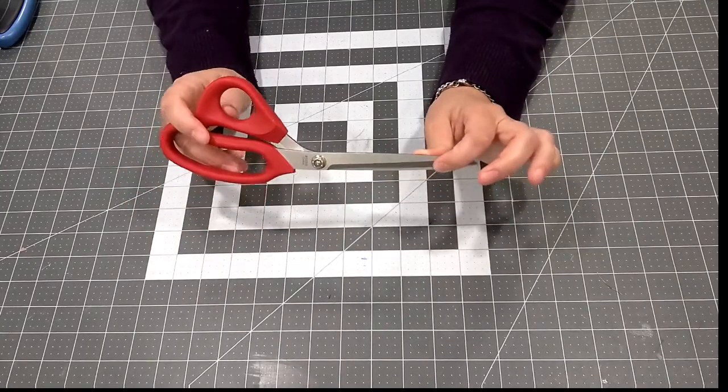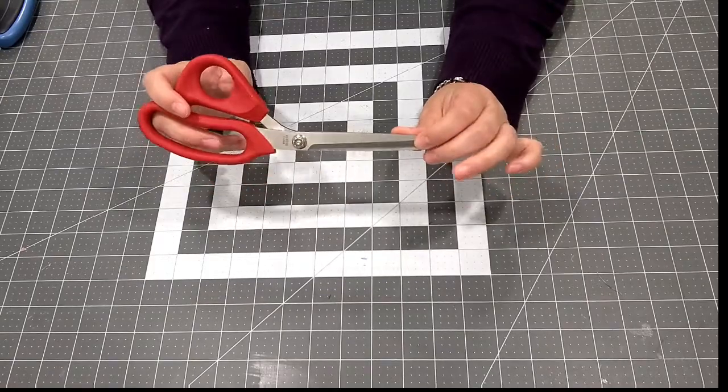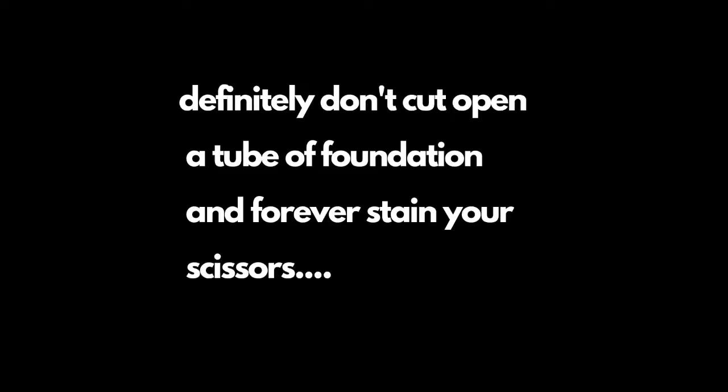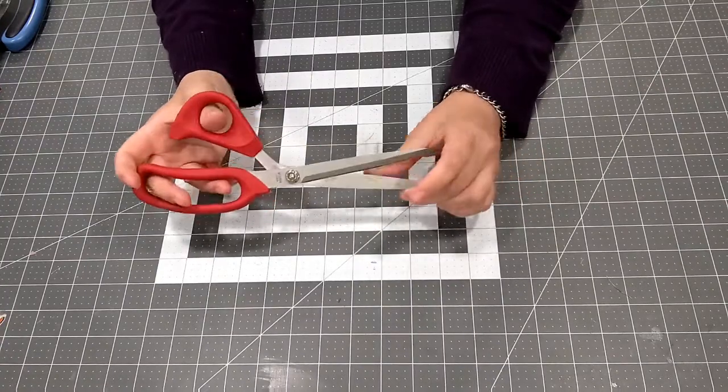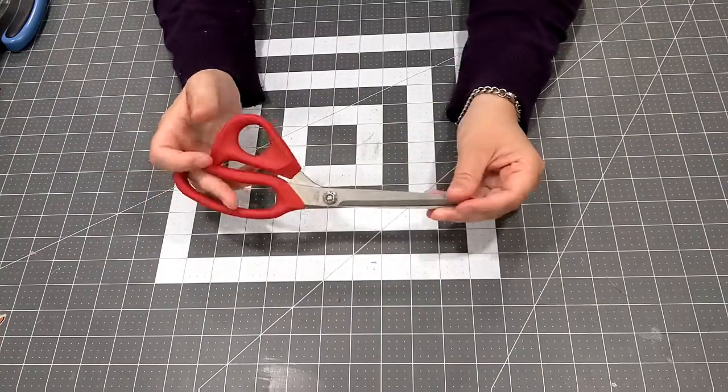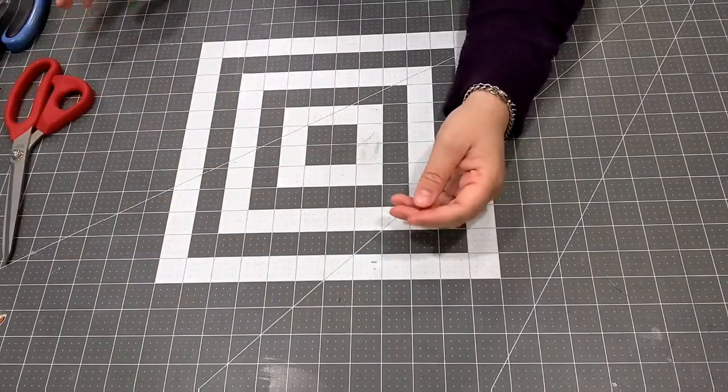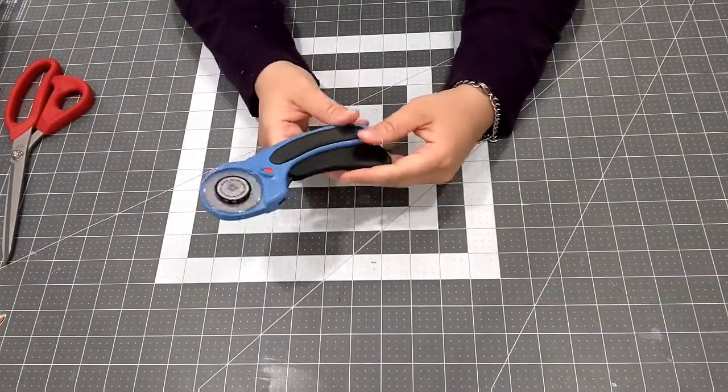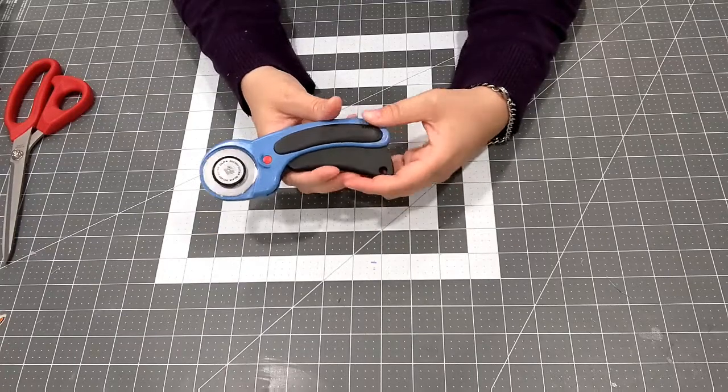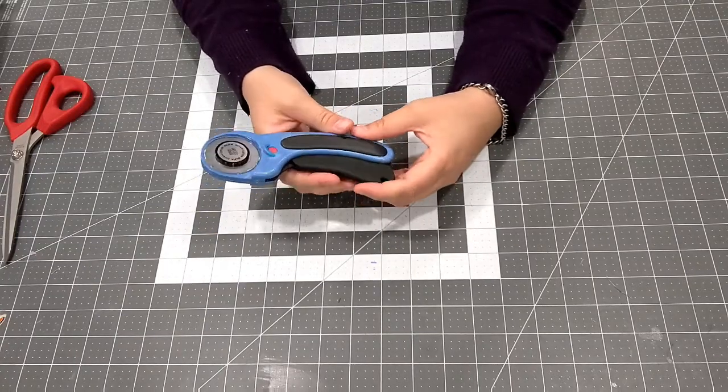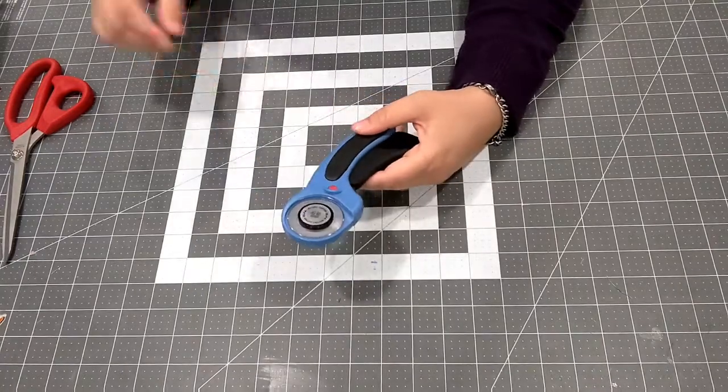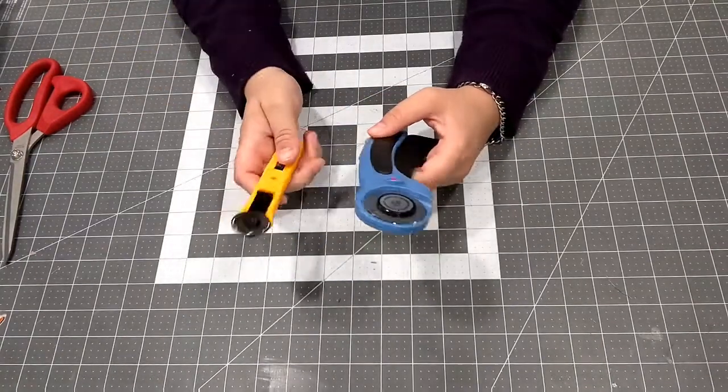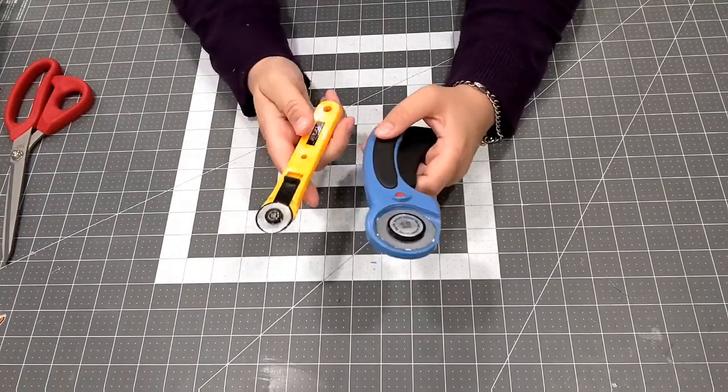Another cutting tool you might want is a rotary cutter. These are great for cutting clean, straight lines, whereas sewing scissors can sometimes leave a bit of a jagged edge. They come in two sizes that I'm aware of: 45 millimeter and 28 millimeter. I use both depending on what I'm cutting.